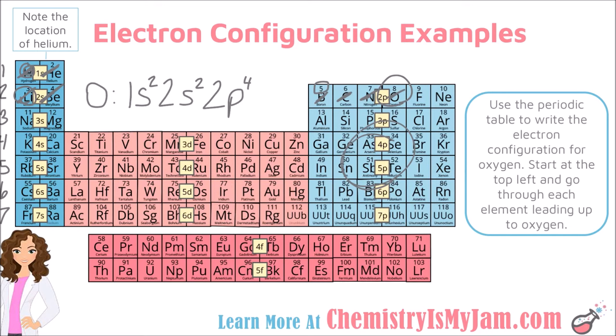So the electron configuration for oxygen is 1S² 2S² 2P⁴. As a reminder: the large numbers indicate the energy level, the letter indicates the sublevel, and the superscript tells you the number of electrons within that sublevel.